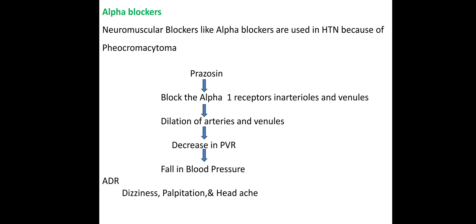Next are alpha blockers. Alpha blockers block alpha receptors in arterioles as well as venules, causing them to dilate. This reduces peripheral vascular resistance and decreases blood pressure. The adverse drug reactions include dizziness, palpitations, and headache.